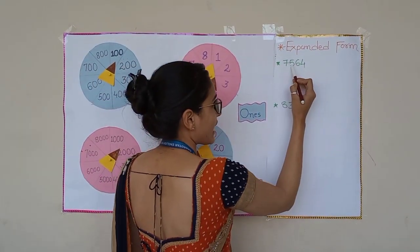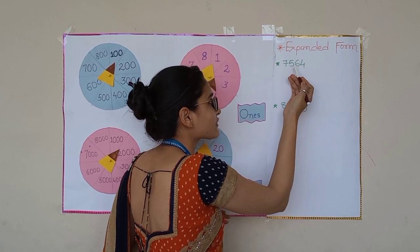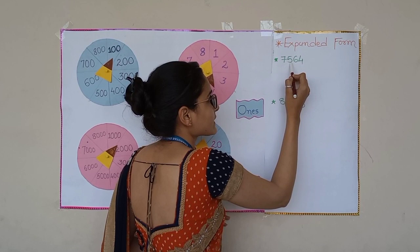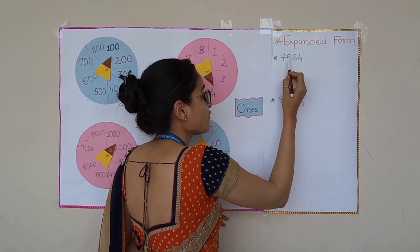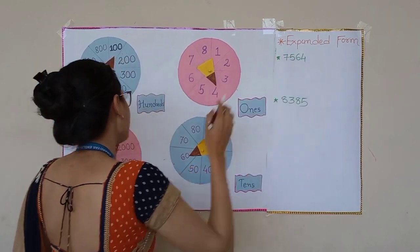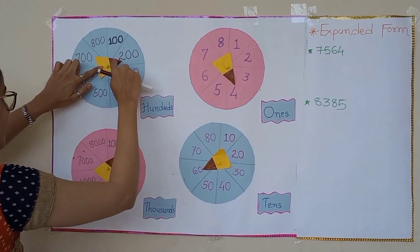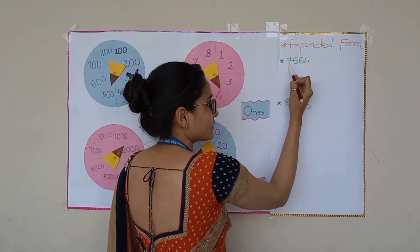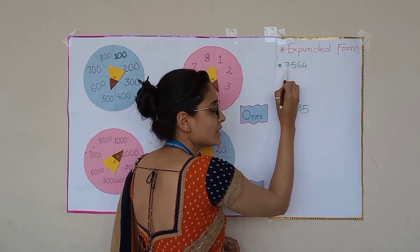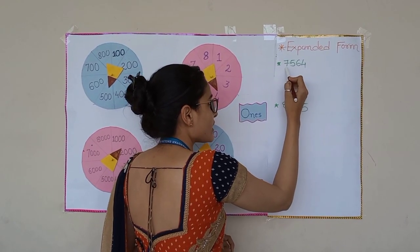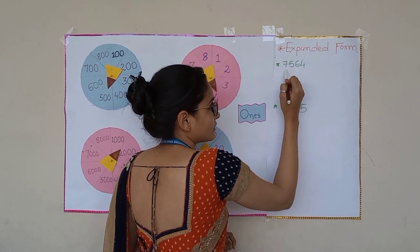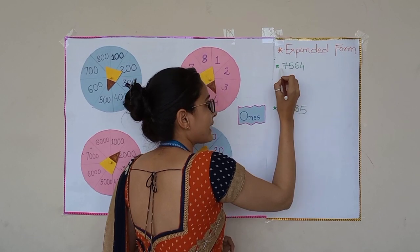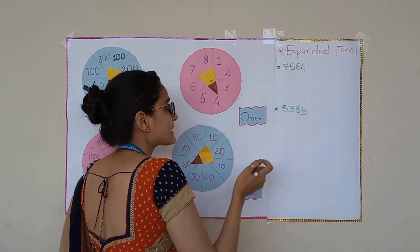The next digit is five. Tell me what is the place value of five. As you know, five is at the hundreds place, so the place value of five is five hundred. I will rotate my wheel to five hundred. The next digit is seven — tell me the place value of seven. As you know, seven is at the thousands place, so the place value of seven is seven thousand.